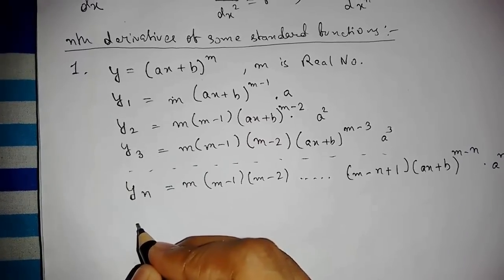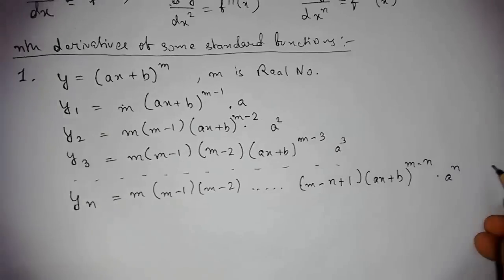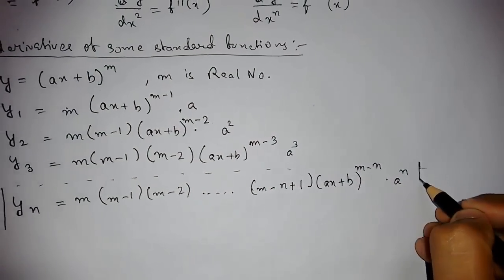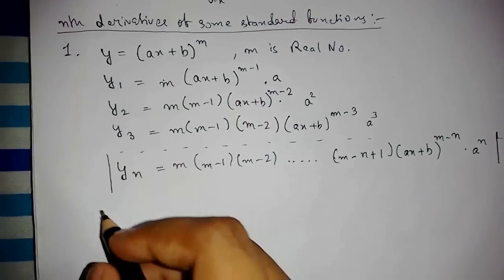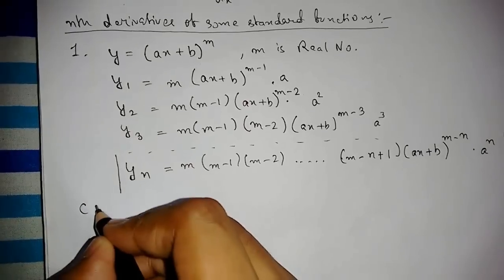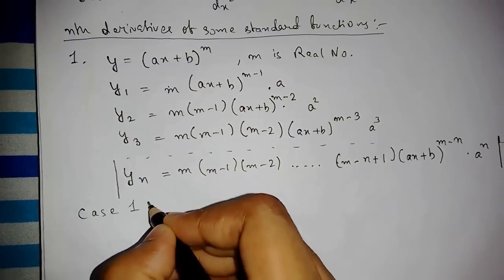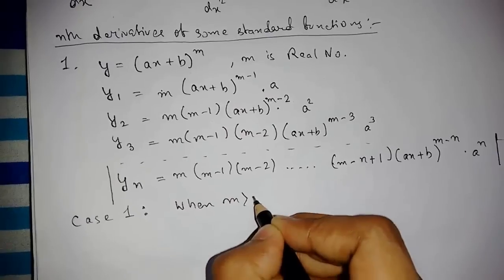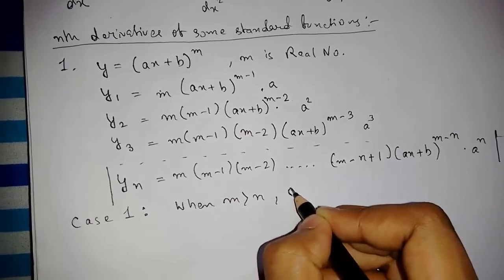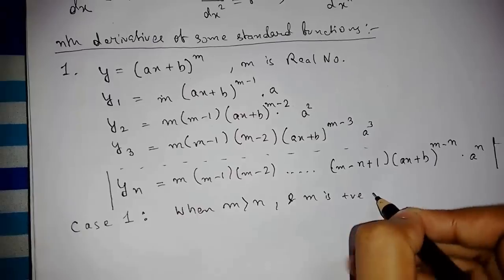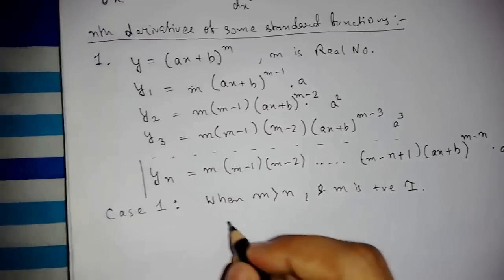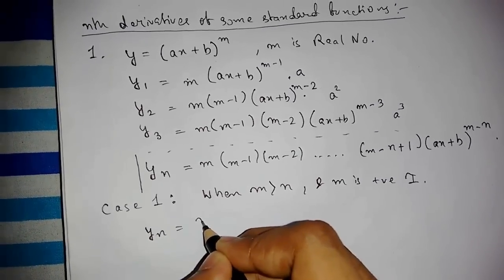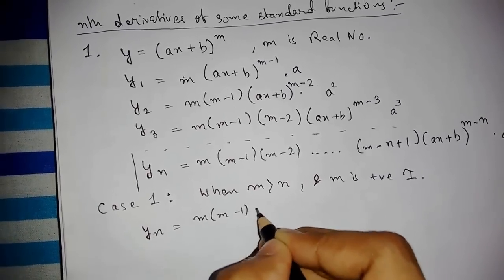So this is our main formula that you need to keep in mind. There are some special cases for this. Case 1: when m is greater than n and m is a positive integer. The formula turns out to be yₙ = m(m−1)(m−2)···